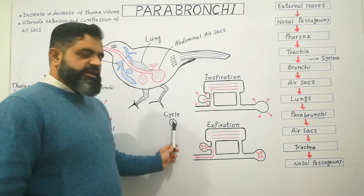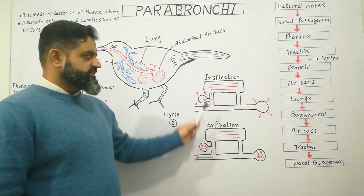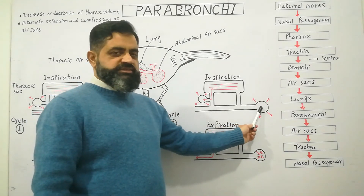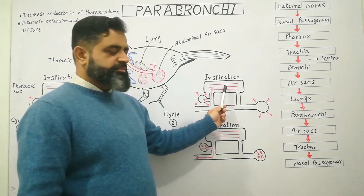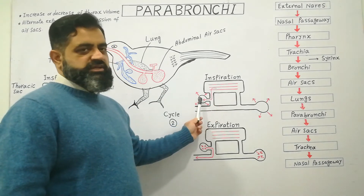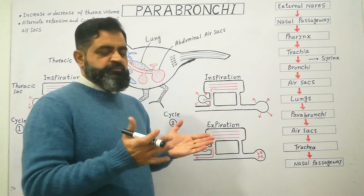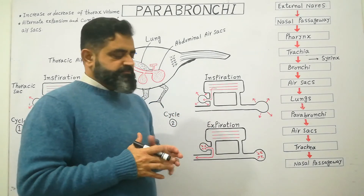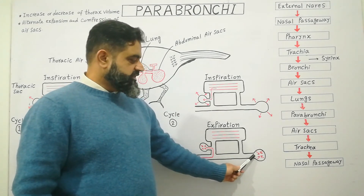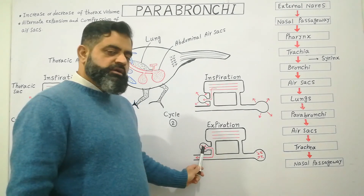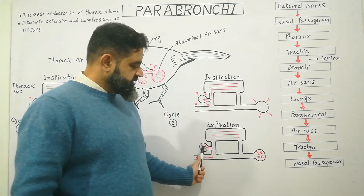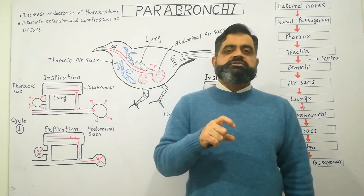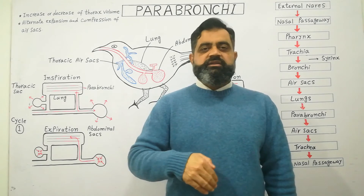During the second cycle the same process takes place — inspiration and expiration. During inspiration, air moves into the nasal passageway and into the abdominal sacs, which expand, and air present in the lungs and parabronchi moves into the thoracic air sacs, which also expand. During expiration, with the help of muscles and bones, compression takes place. When abdominal air sacs are compressed, air moves into the lungs; when thoracic air sacs are compressed, air moves into the nasal passageway and out of the body.